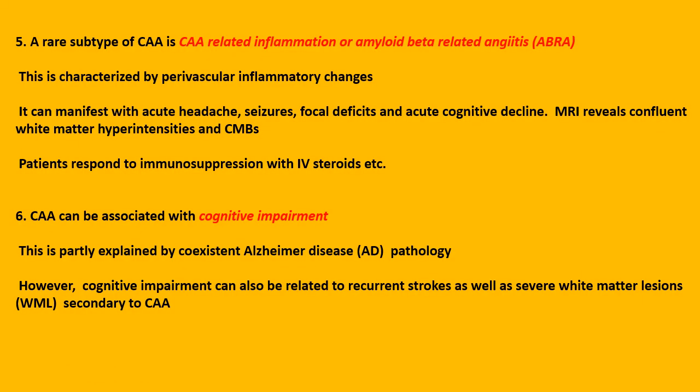Number five: a rare subtype of CAA is CAA-related inflammation, or amyloid beta-related angiitis, also called ABRA. This is characterized by perivascular inflammatory changes. It can manifest with acute onset headache, seizures, focal deficits, and acute cognitive decline. MRI reveals confluent white matter hyperintensities and CMBs. Patients respond to immunosuppression with IV steroids or other agents.